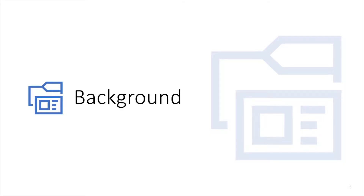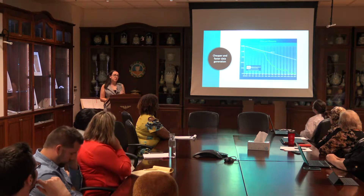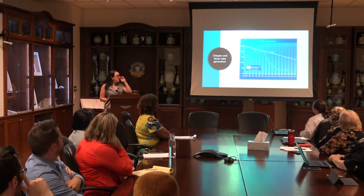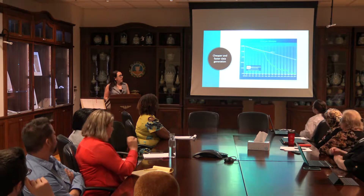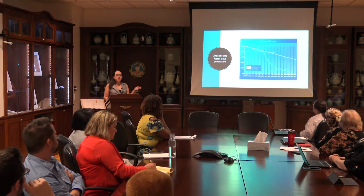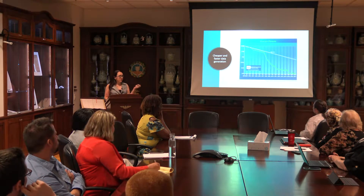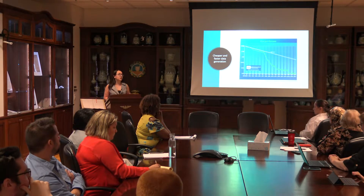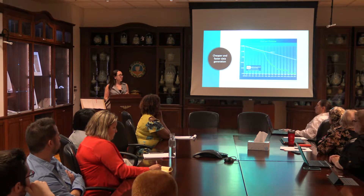We are at a point in time where we have more data than ever before, partly because we are able to generate data much more cheaply and quickly than in the past. What you see here is a chart of how much it costs to sequence an individual human genome over time. When we first did that with the Human Genome Project, it took about 13 years and several billion dollars. Now we can do it in about 24 hours for about a thousand dollars. So we are able to create and store data at a rate we never were in the past.